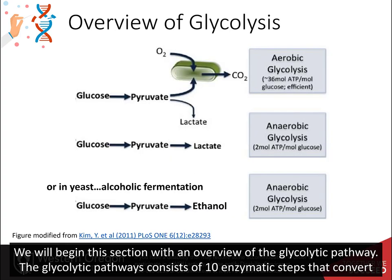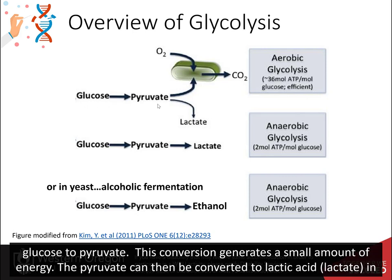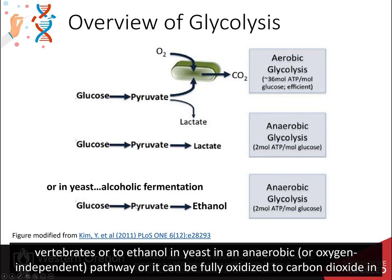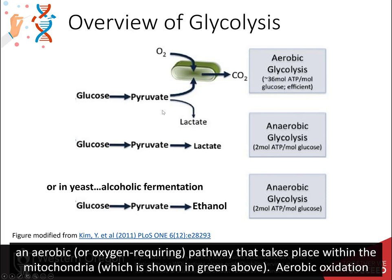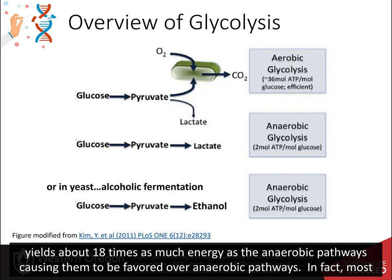We will begin this section with an overview of the glycolytic pathway. The glycolytic pathway consists of 10 enzymatic steps that convert glucose to pyruvate. The conversion generates a small amount of energy. The pyruvate can then be converted to lactic acid or lactate in vertebrates, or to ethanol in yeast, in an anaerobic or oxygen-independent pathway. Or it can be fully oxidized to carbon dioxide in an aerobic or oxygen-requiring pathway that takes place within the mitochondria, shown in green. Aerobic oxidation yields about 18 times as much energy as the anaerobic pathways, causing them to be favored.